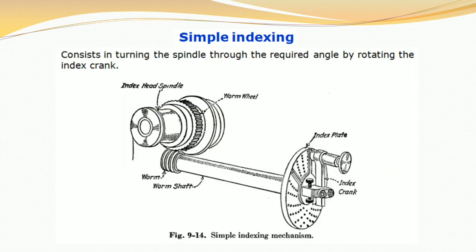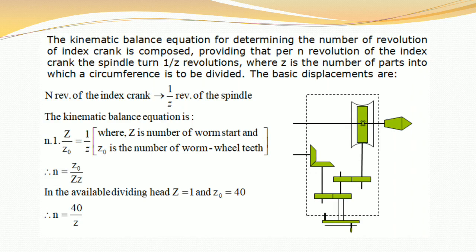Simple indexing consists of turning the spindle through the required angle by rotating the index crank. The figure of the simple indexing mechanism shows the index head spindle, worm wheel, worm, worm shaft, index plate, and index crank. The kinematic balance equation for determining the number of revolutions of the index crank is derived such that per n revolutions of the index crank, the spindle turns 1/N revolutions, where N is the number of parts into which the circumference is to be divided. The basic displacements are: n revolutions of the index crank equals 1/N revolution of the spindle.